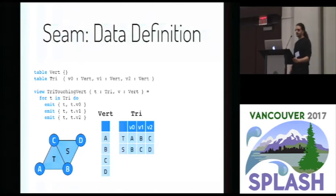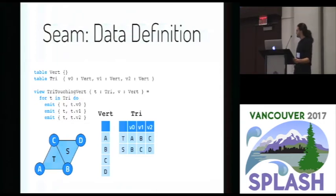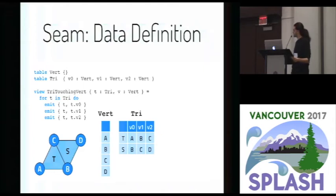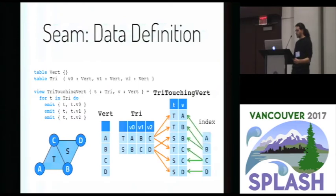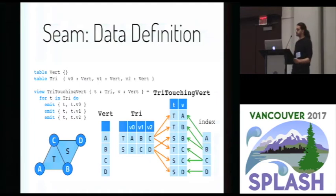In the C++ example, we saw that base tables are not enough — we need extra data structures to encode the touching triangles. In SIEM, we still need to do that, but it's not the programmer's responsibility to build and maintain these. Instead, we borrow the concept of views from relational databases and allow the user to give a declarative specification of the contents of these data structures. It's actually the compiler's responsibility to emit code that both generates and maintains them incrementally. The compiler will also emit appropriate indices over these views, in this case an index on column V to support fast access to triangles surrounding a vertex.